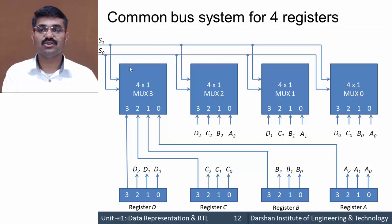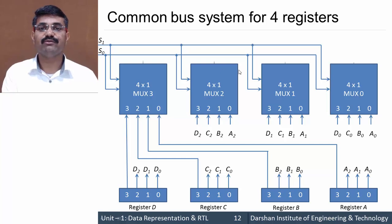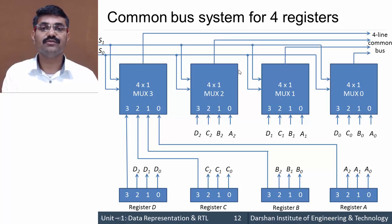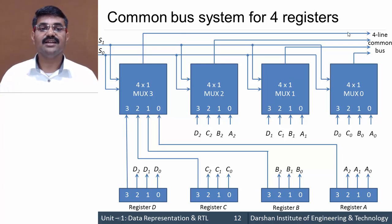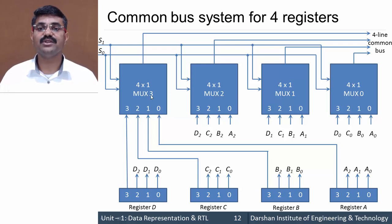The two select lines S1 and S0 are shared — all multiplexers are connected to the same S1 and S0 lines. We have four outputs which go to a four-line common bus. This is the hardware arrangement for the common bus system. Now we need to understand how this circuit works.